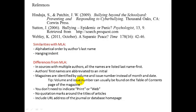Similarities to MLA include alphabetical ordering and the hanging indent. But here are some differences: in sources with multiple authors, all names are listed last name first in APA — so both Hinduja and Patchen are listed last name first, unlike MLA where only the first author is reversed. Also, authors' first names are not spelled out — they're just initials: Hinduja S., Sutton J., Webley K. We don't need their first names in APA style.